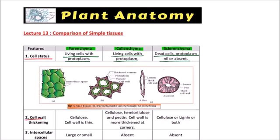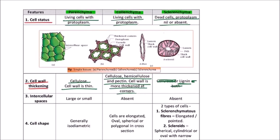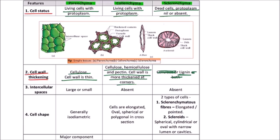Cell wall thickening is made up of cellulose and the cell wall is thin in case of parenchyma cells. In collenchyma, cellulose, hemicellulose, and pectin are found in the cell wall and the cell wall is more thickened at corners. Finally, sclerenchyma is lignified and also has cellulose, so lignified thick-walled cells are found in sclerenchyma.